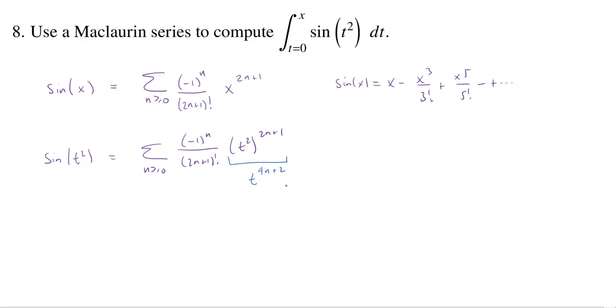Now, if I want to integrate sine of t squared from 0 to x, I can instead integrate this power series. So the integral from 0 to x of sine of t squared dt is going to be the integral from 0 to x of this series. And the cool part about this series is that almost all of it has nothing to do with t. It's just this one little piece at the end, this t to the 4n plus 2 power.